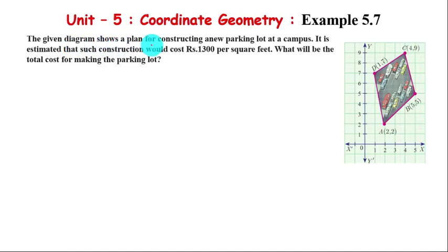The given diagram shows a plan for constructing a new parking lot at a campus. It is estimated that such construction would cost Rs. 1300 per square feet. What will be the total cost for making the parking lot?